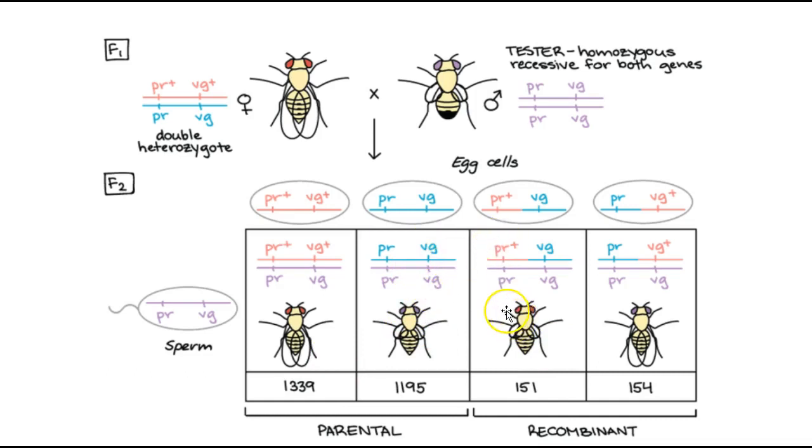And the reason why is that notice we have a situation here where we have a red-eyed but vestigial-winged fly. If you look at the parents, neither parent has red eyes and vestigial wings. This parent has red eyes and normal wings. This parent has purple eyes and vestigial wings. This is the same case here, normal wings, but not normal eyes. And so these two are considered recombinants, because the only way that could have caused that had there been a crossing over in these particular situations of the genes in the sperm or the egg.